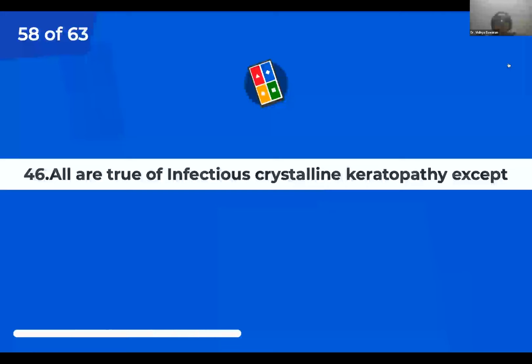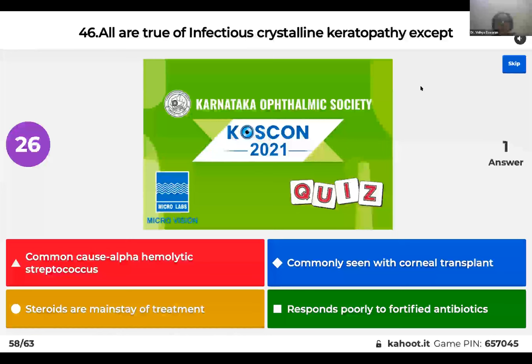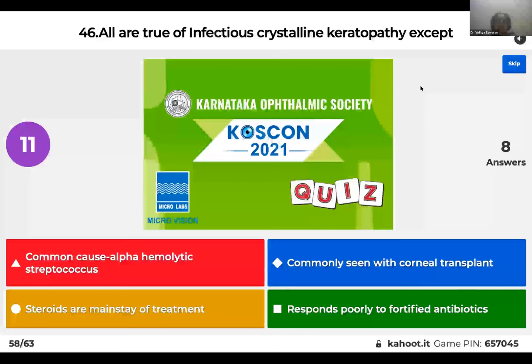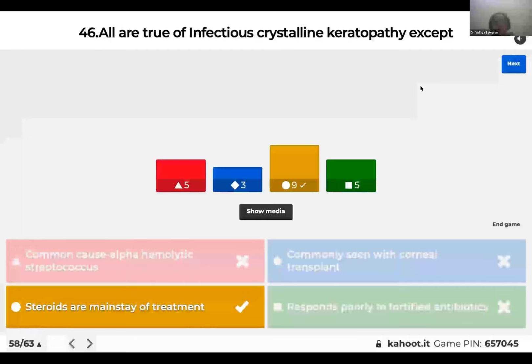Question 46: All are true of infectious crystalline keratopathy except: common cause is alpha-hemolytic streptococci; commonly seen with corneal transplant; steroids are a mainstay of treatment; or it responds poorly to fortified antibiotics? The right answer is that steroids should be withdrawn. The moment a patient develops infectious crystalline keratopathy, steroids should be immediately discontinued.